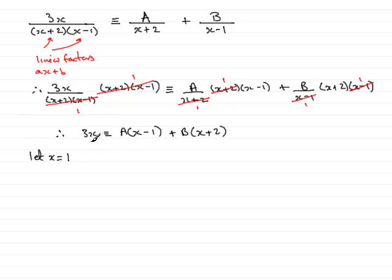then on the left here I've got 3 times 1, which is 3. Now we change this to an equal sign because it's an equation. And as I mentioned earlier, 1 take 1 is 0, so A times 0 is 0, so that disappears. And then we've got here 1 add 2, which is 3, and so we have B times 3, so 3B. And from this we can deduce that B must obviously be 1. So I've got the value of B now.